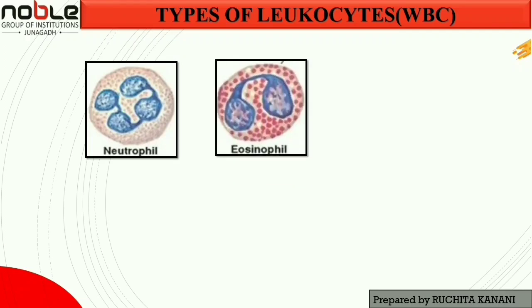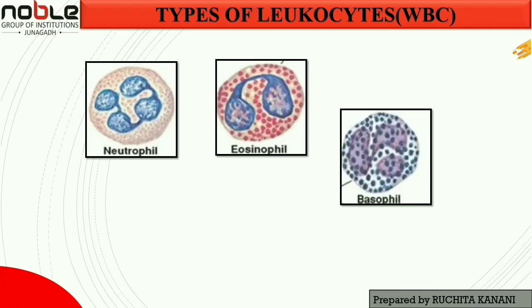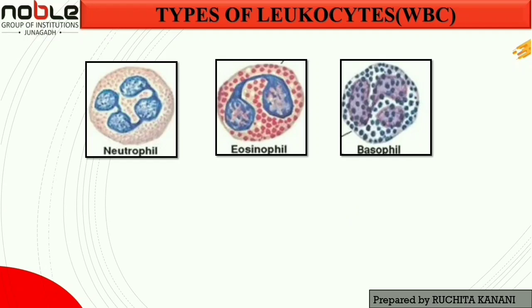Second, eosinophils have large orange granules in their cytoplasm and bilobed nuclei. They are found in low amounts in normal blood. Third, basophils exhibit large dark purple granules that often cover the cell's nucleus. They are the rarest of the five normal cell types.